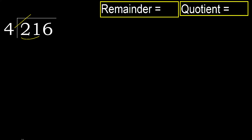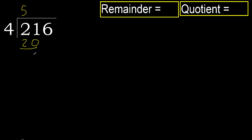4. Multiply by 6: 24 is greater. Multiply by 5: 20 is not greater, ok. Subtract. Next.